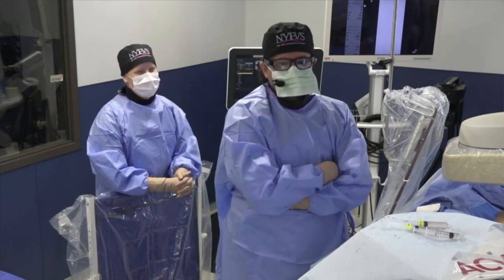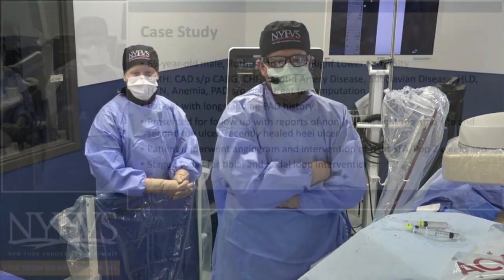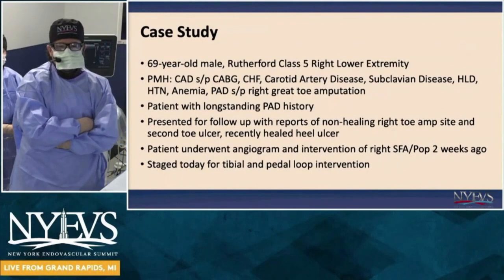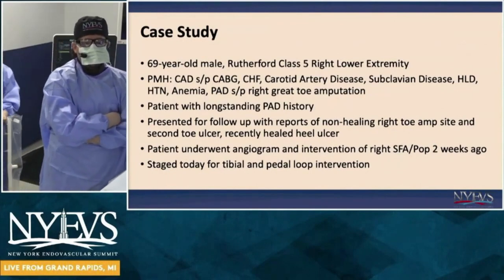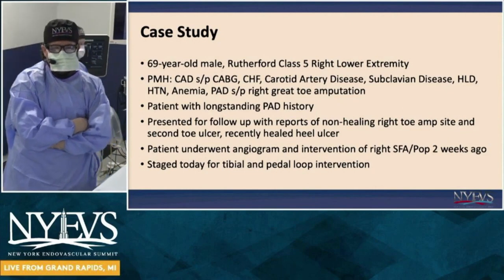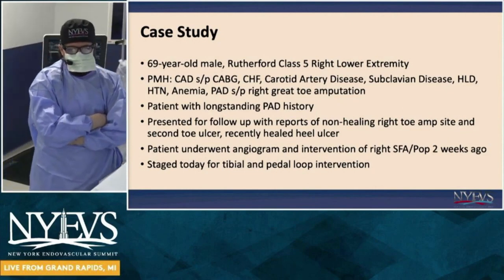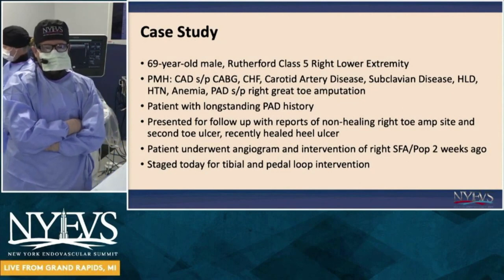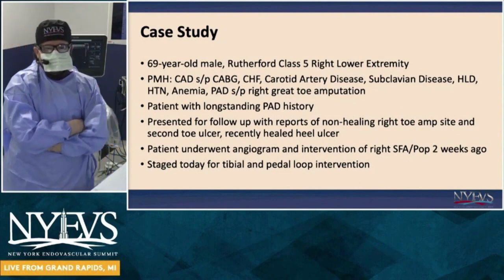We have a very interesting case for you today. This is a 69-year-old gentleman. He's a Rutherford class 5 with a wound at an amputation site of a great toe. He has typical risk factors seen with CLI patients: coronary artery disease, CKD, and diabetes.